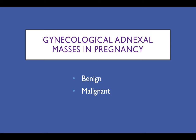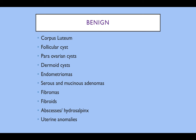Moving on to gynaecological adnexal masses in pregnancy — these masses can be benign or malignant. Common benign masses include corpus luteum, which we should see in almost every pregnancy, follicular cysts, paraovarian cysts, and dermoid cysts, which are very commonly picked up at the first trimester screening scan. Less common are endometriomas, serous or mucinous adenomas, fibromas, fibroids, and rarely abscesses or hydrosalpinx. Uterine anomalies can also present as adnexal masses in pregnancy.